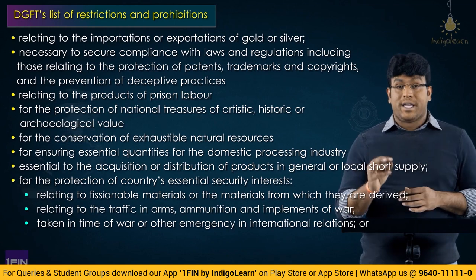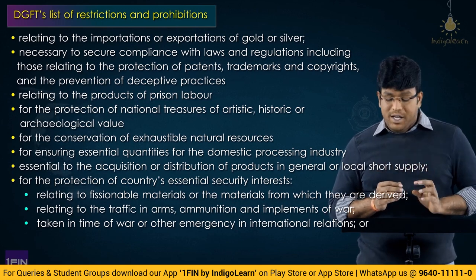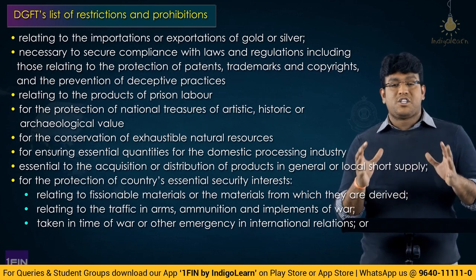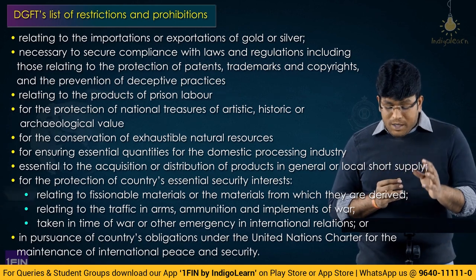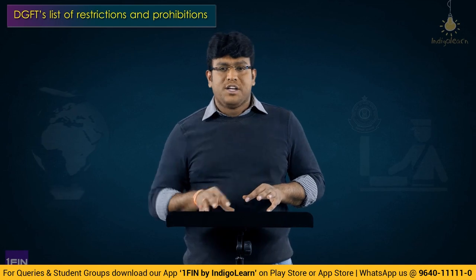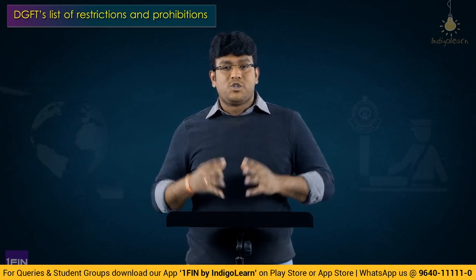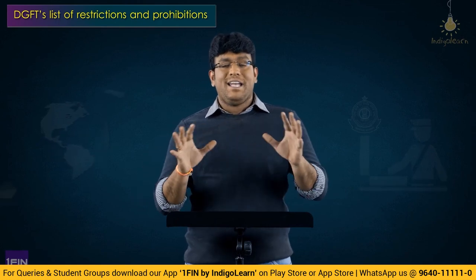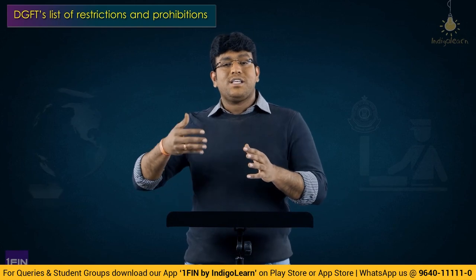Further circumstances where DGFT may impose prohibitions or restrictions: for protection of countries' essential security interest related to fissionable materials or materials from which they are derived; relating to traffic in arms and ammunitions and implements of war; or taken in time of war or other emergency in international relations; or in pursuance of the country's obligations under the United Nations Charter for the maintenance of international peace and security. These points are introduced to give power to DGFT to impose prohibition or restriction by notification, to ensure compliance with international standards and international agreements.